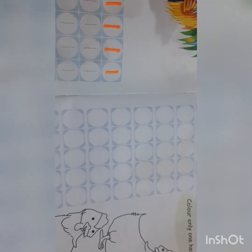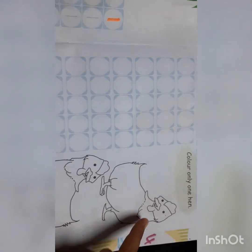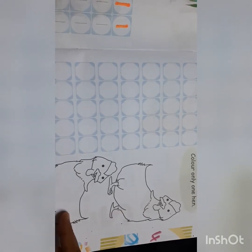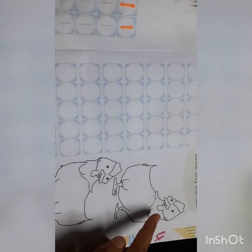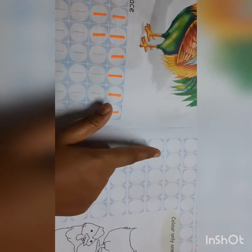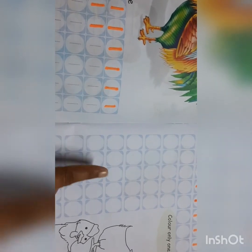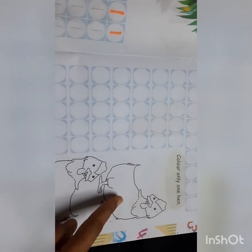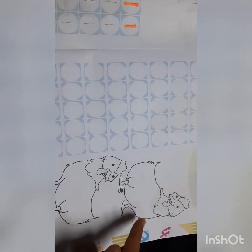And along with that, here you can see there is a picture of two hens. As we are learning writing one, you have to color only one hen. So do it.